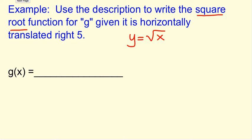Now we have our translation. Our translation is right 5. So what happens is inside the function, we have to think opposite. If we're going to go to the right 5 units, we actually have to think opposite of adding 5.